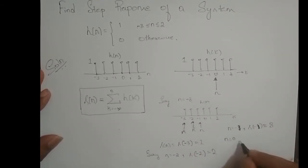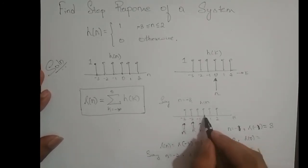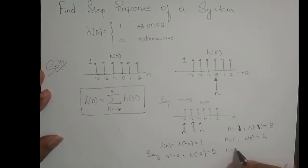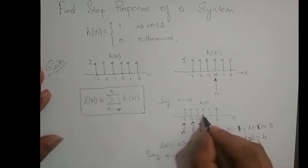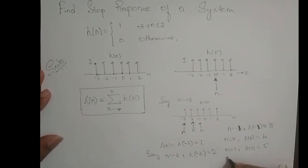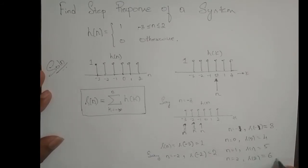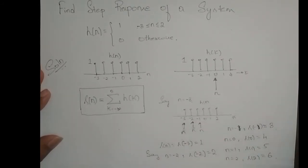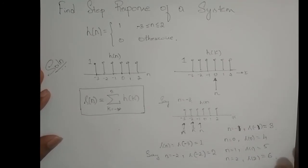For n equal to 0, S of 0 is 1 plus 1 plus 1 plus 1 which is 4. For n equal to 1, S of 1 is 1 plus 1 plus 1 plus 1 plus 1 which is 5. And n equal to 2, S of 2 is 6. So depending upon where you keep this n value, the step response is actually the running sum.